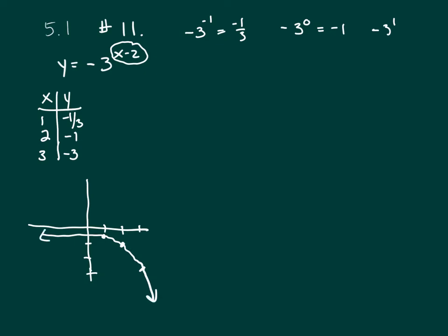Now if you think about the graph of 3 to the x, which is the basic graph this comes from, if you were to graph that using the same method, you'd have (0, 1), (1, 3), and (-1, 1/3). So if I graph that, I get (0, 1), (1, 3), one, two, three, and (-1, 1/3).